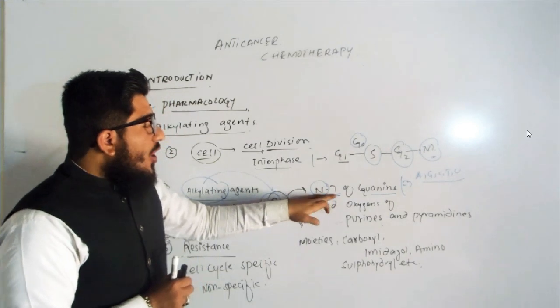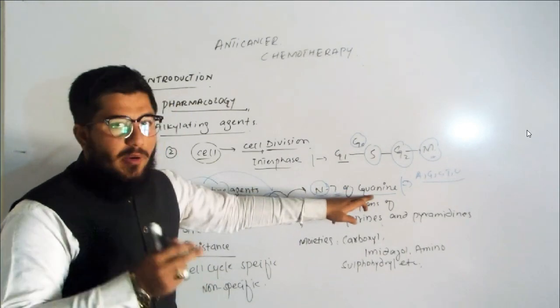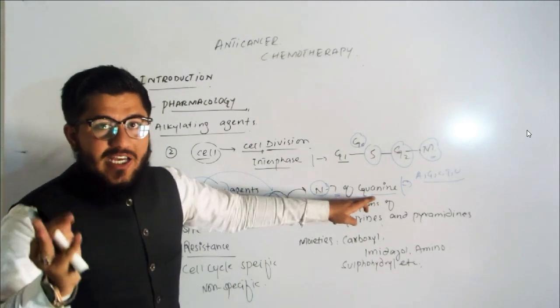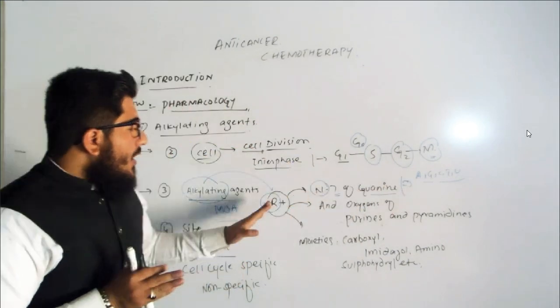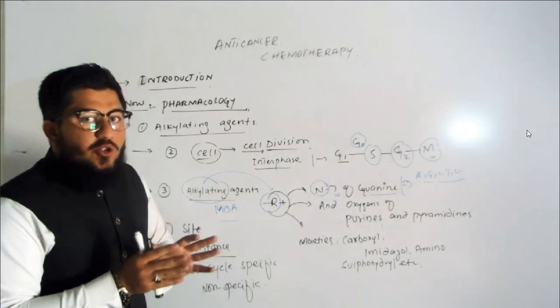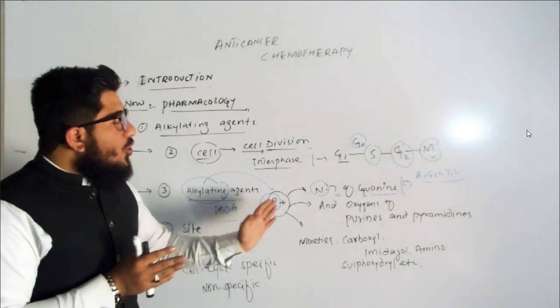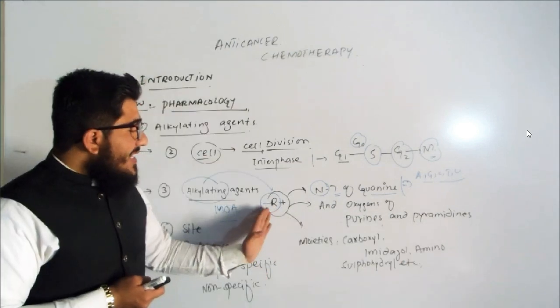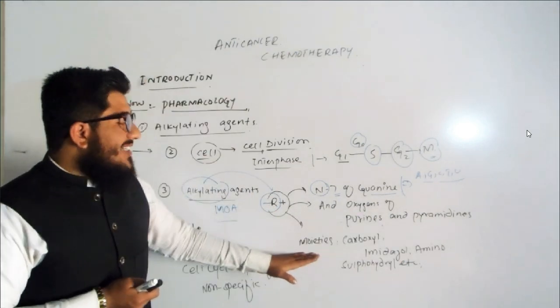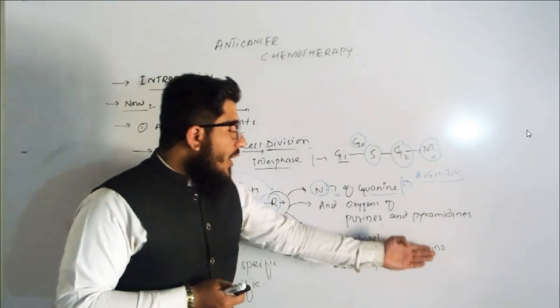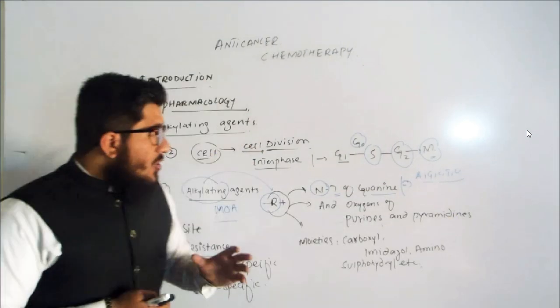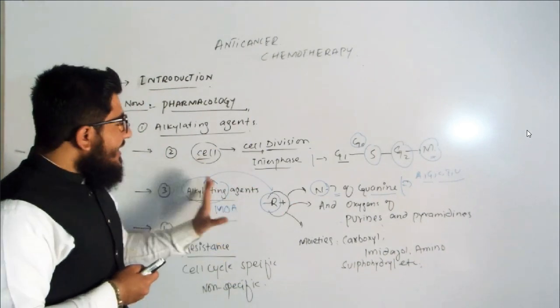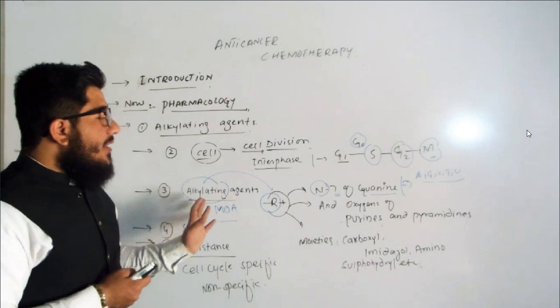Regarding anti-cancer, what are alkylating agents doing? Alkylating agents will add the alkyl group to nitrogen 7 of guanine. You know about guanine, one of the nitrogenous bases: guanine, cytosine, thymine, uracil. It also adds the alkyl group to the oxygens of purines and pyrimidines. It also adds the alkyl group to other moieties like carboxyl, imidazole, amino, and sulfhydryl, etc.